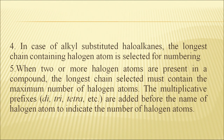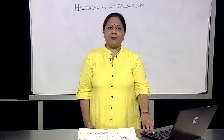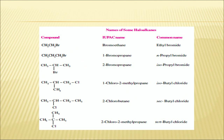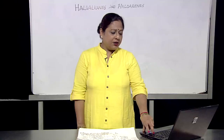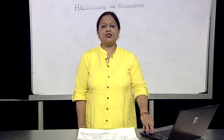Multiplicative prefixes like di, tri, tetra are added before the name of the halogen atom to indicate the number of halogen atoms. For example, CH3CH2Br is called bromoethane — the halogen is prefixed before the hydrocarbon name. For CH3CHCH3CH2Cl, we number where the halogen is: 1-chloro, 2-methyl, on a propane chain, giving 1-chloro-2-methylpropane. This is how we name halogen compounds.